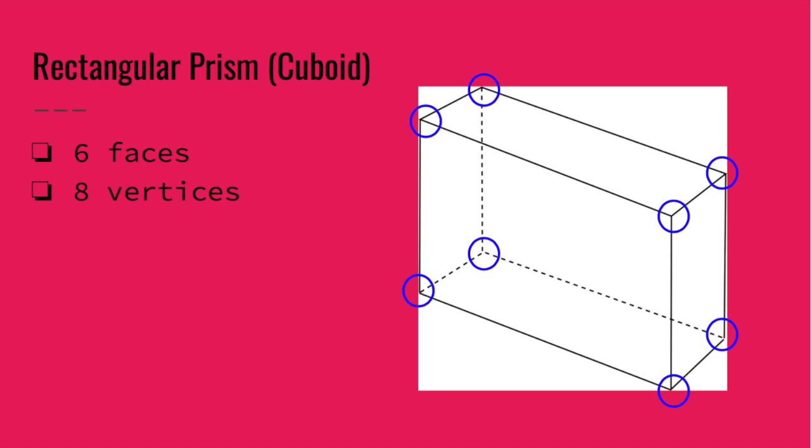A rectangular prism is similar to a cube. Both of them have six faces and eight vertices. The only difference is that the faces on a cube are square and the faces on the rectangular prism are rectangle shaped, but they still have six faces and eight vertices.